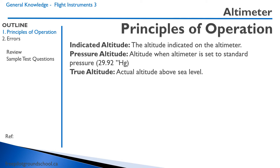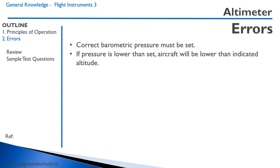The true altitude is the actual altitude above sea level. The altimeter really doesn't have any errors; however, you must set the correct barometric pressure. If you do not set the correct barometric pressure on the altimeter, you will not get an accurate altitude. If the pressure outside is lower than what is set on the altimeter, the aircraft will be lower than the indicated altitude.